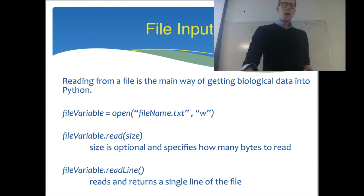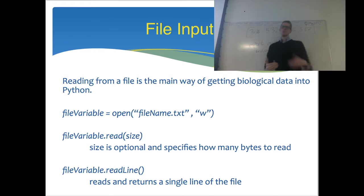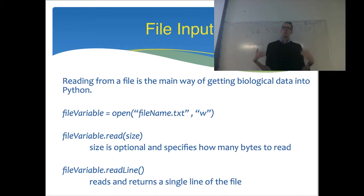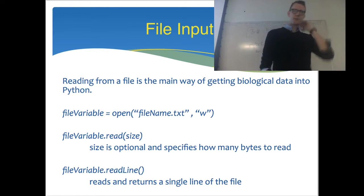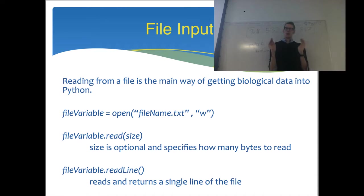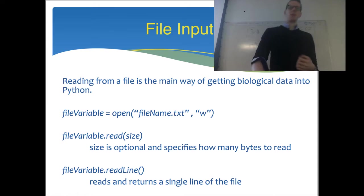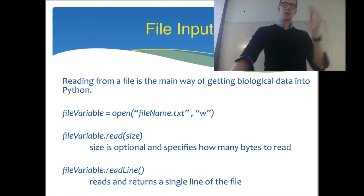The functions used to read and write to files are .read and .readline. .read is not so useful for biological data unless you're working with binary data like a movie or sound file. Most of what we're dealing with will be a text file — some spreadsheet or comma-separated value file. For that type of data, readline is much more useful. .read reads a certain number of bytes, which gets complicated since you don't know how many bytes one line might be. .readline will read a line and return it, so that's what we use most of the time.